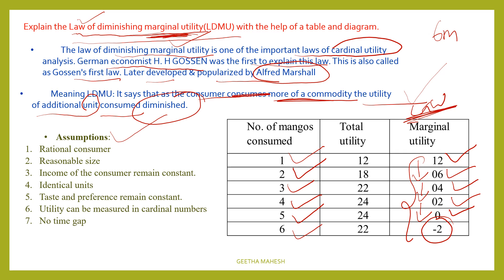Now we will look at the assumptions. First one is rational consumer — he must be very calculative. Second assumption is reasonable size: the size of the unit consumed must be reasonable.